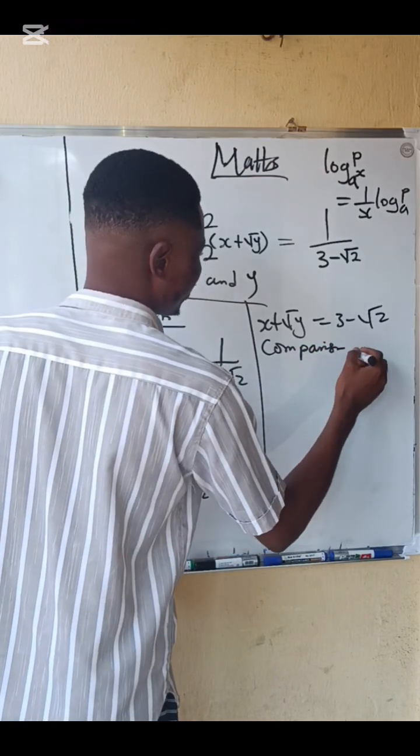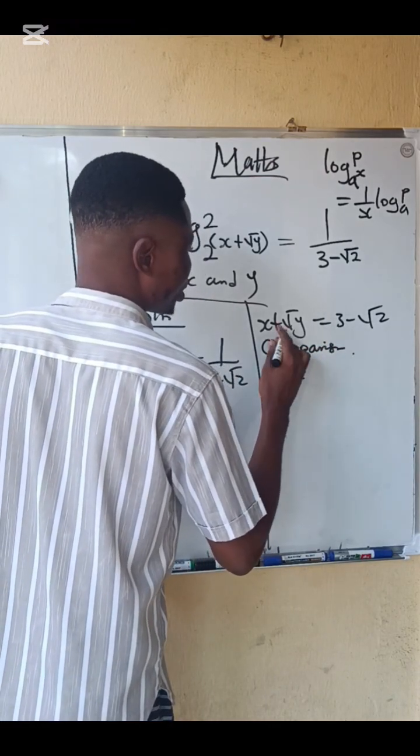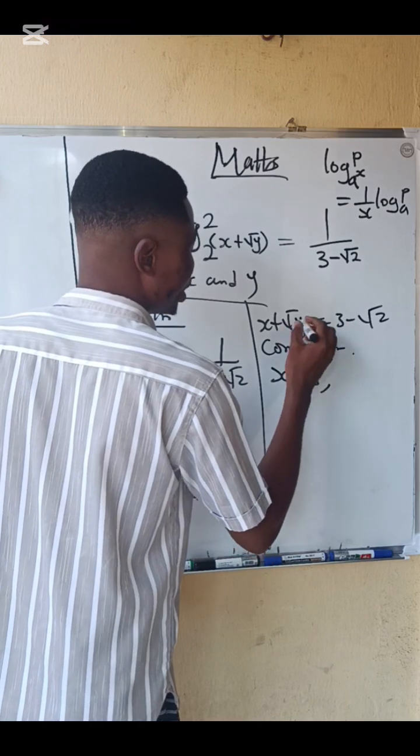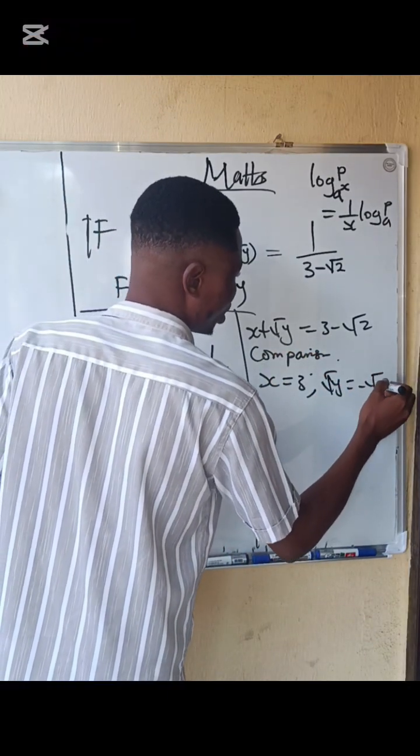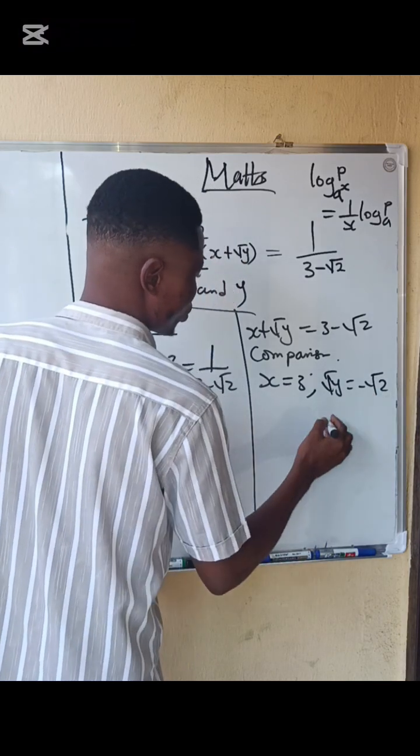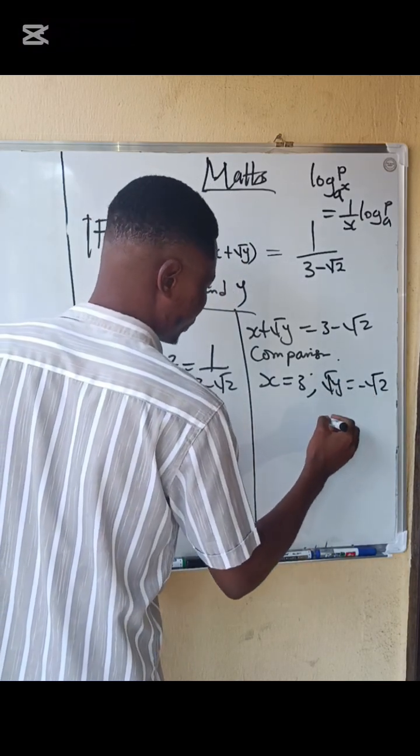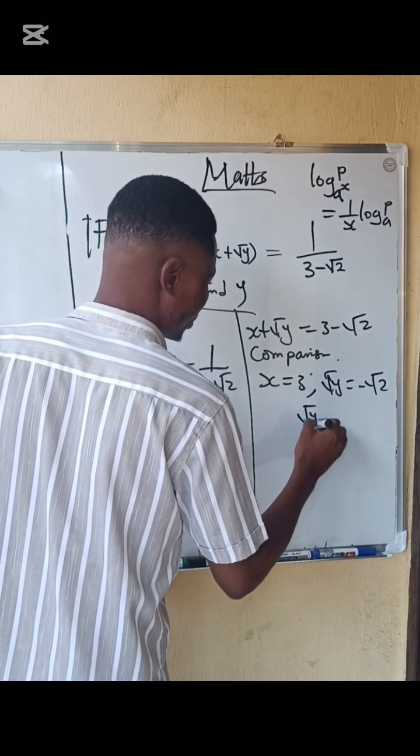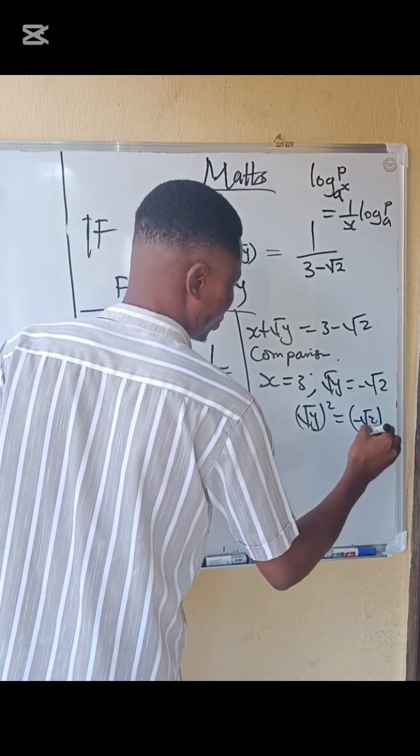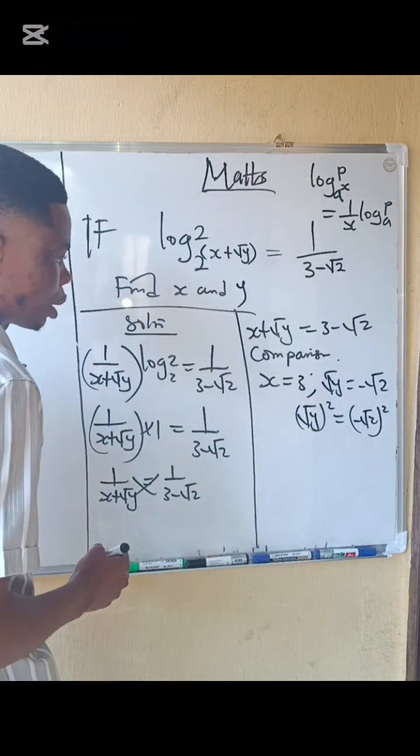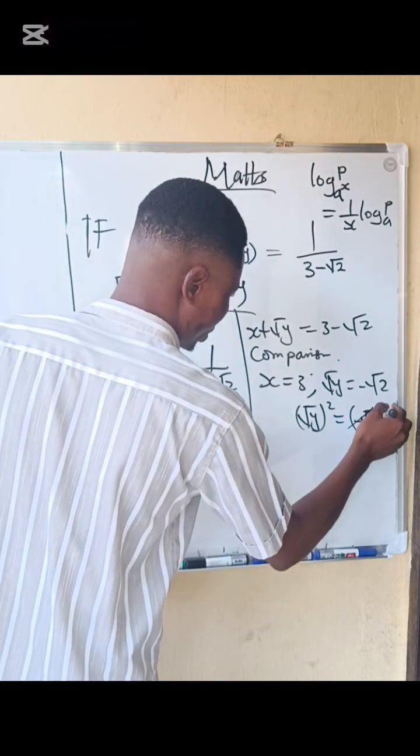By comparison, x equals 3, and root y equals minus root 2. If we square both sides...